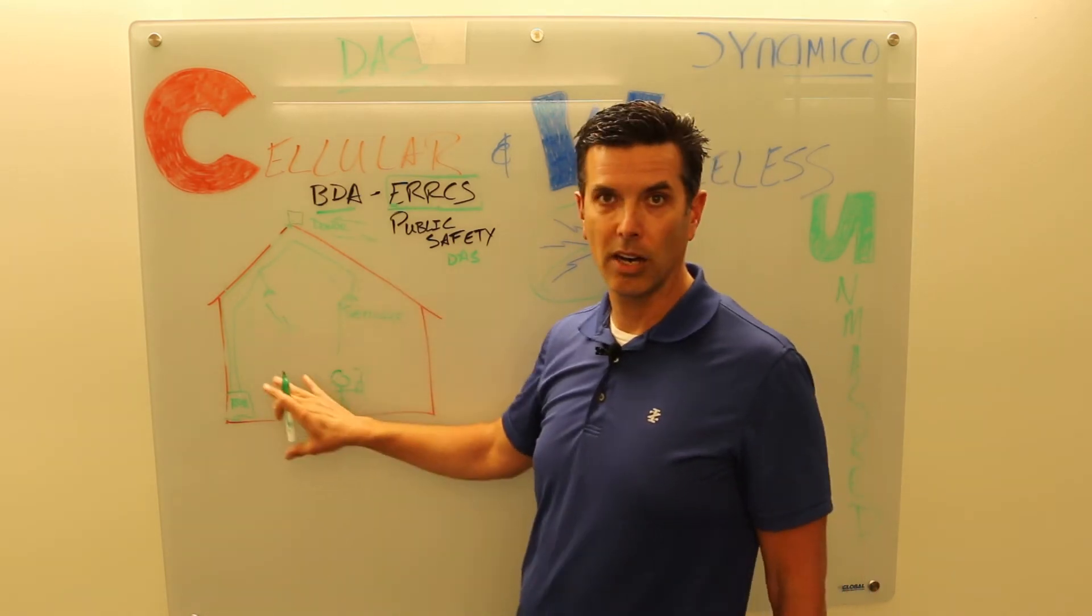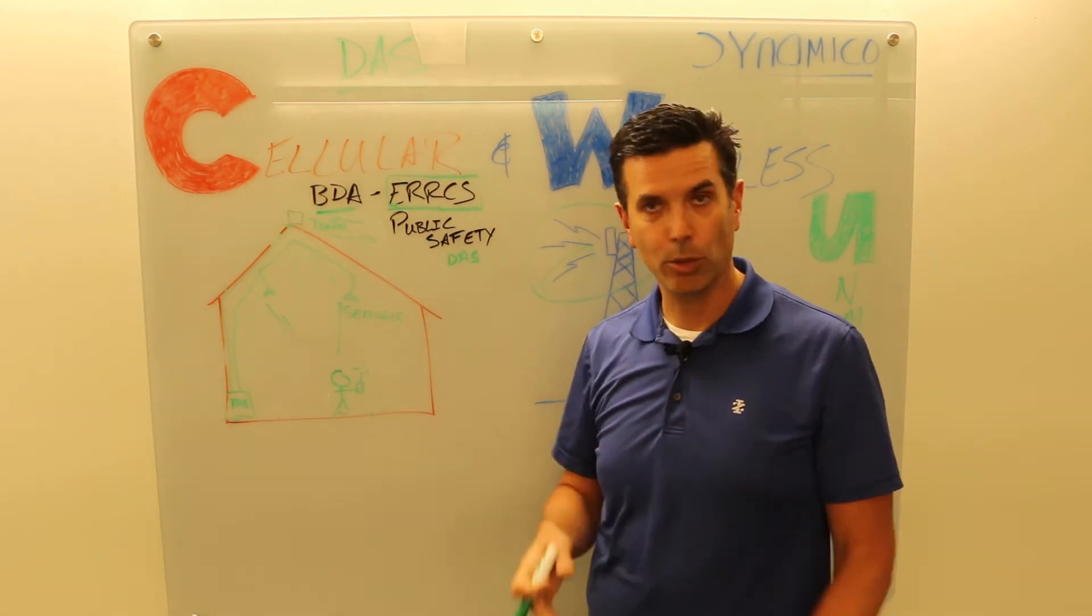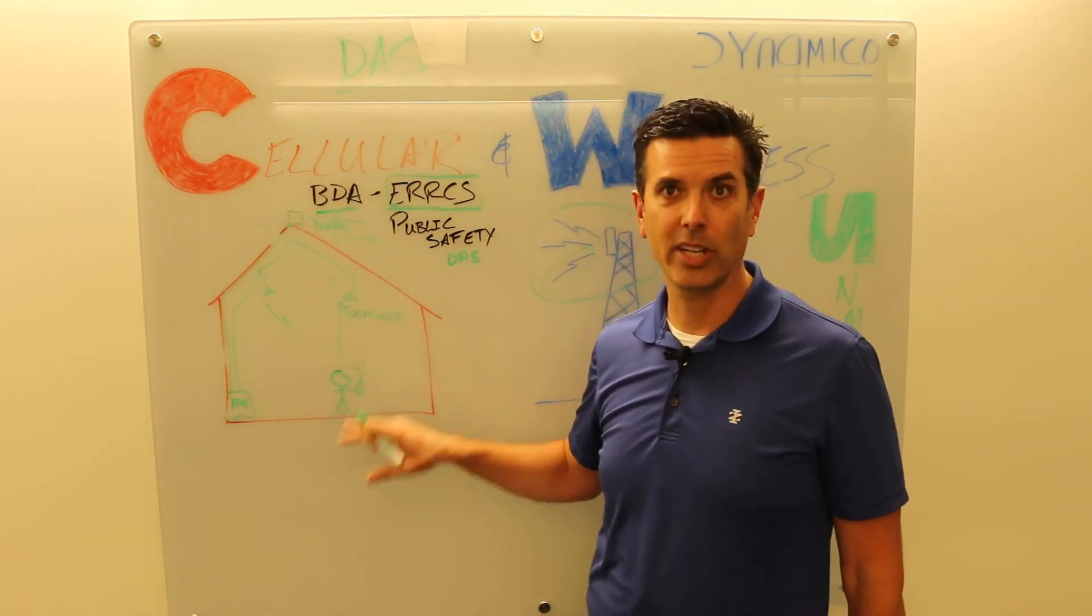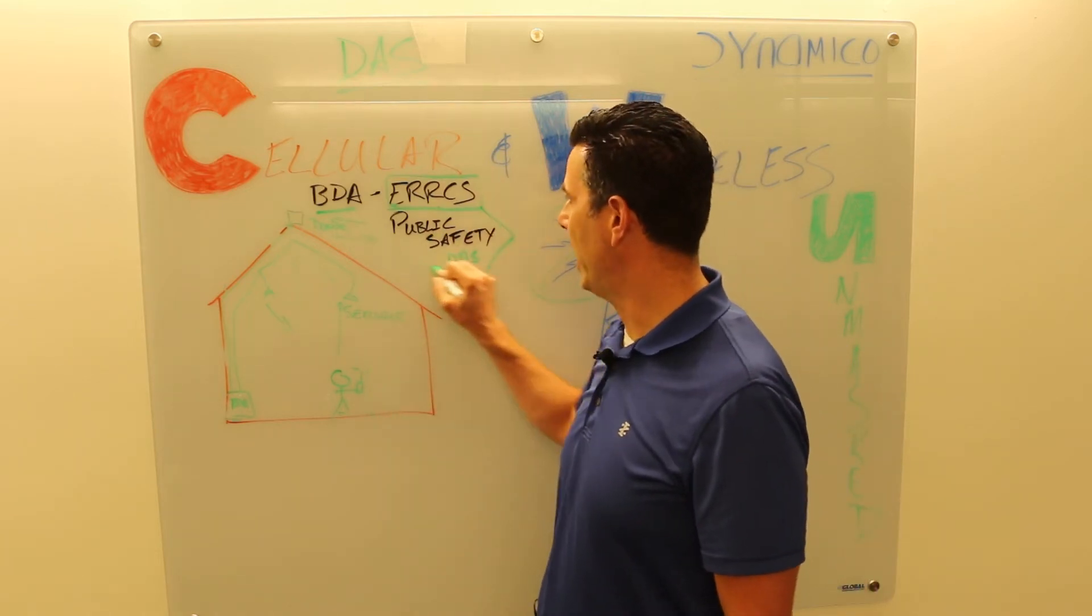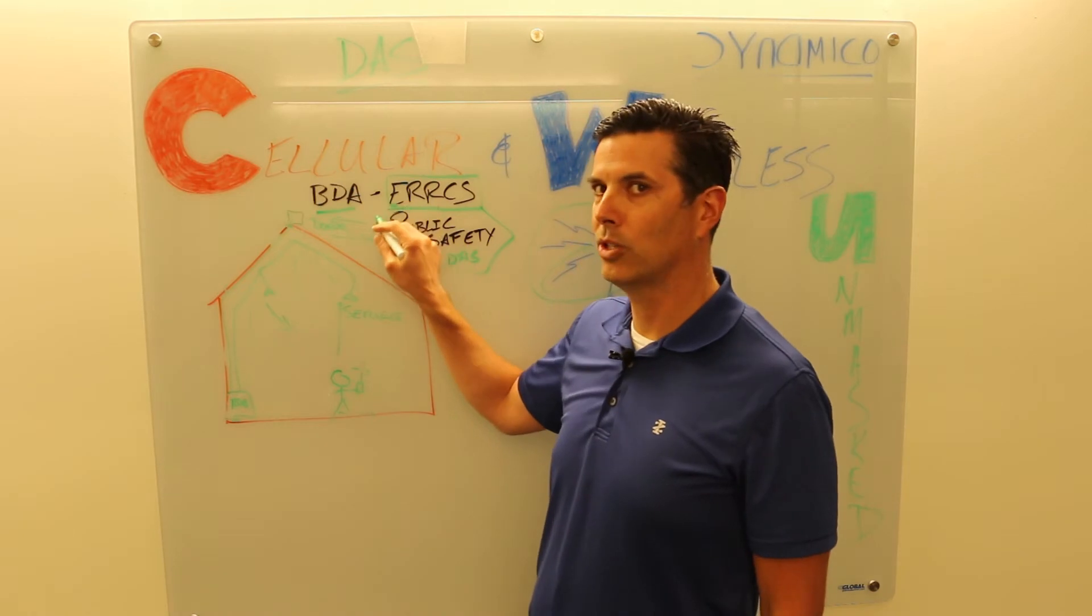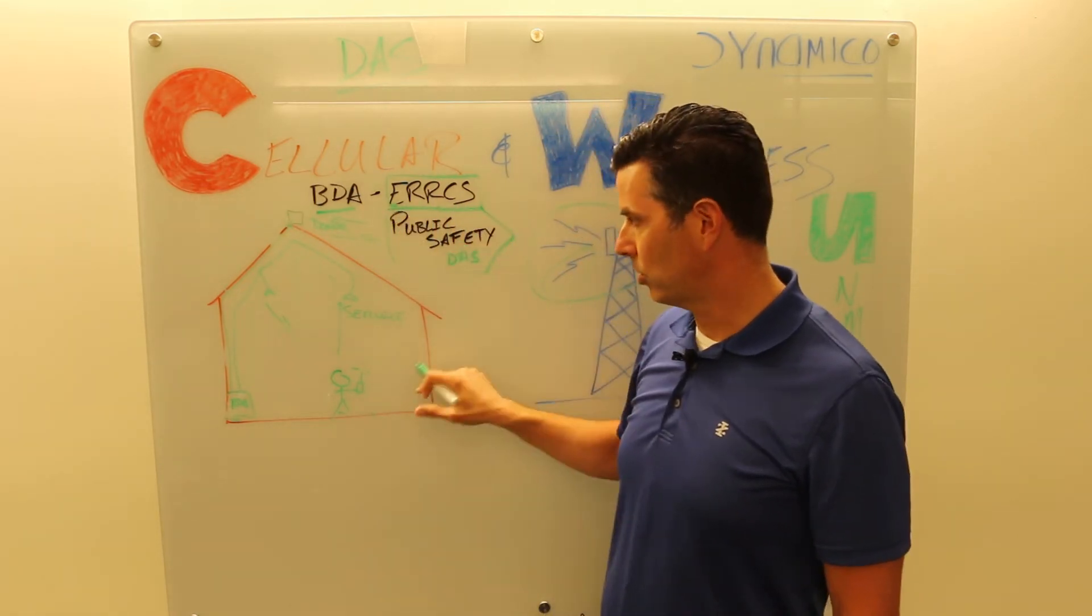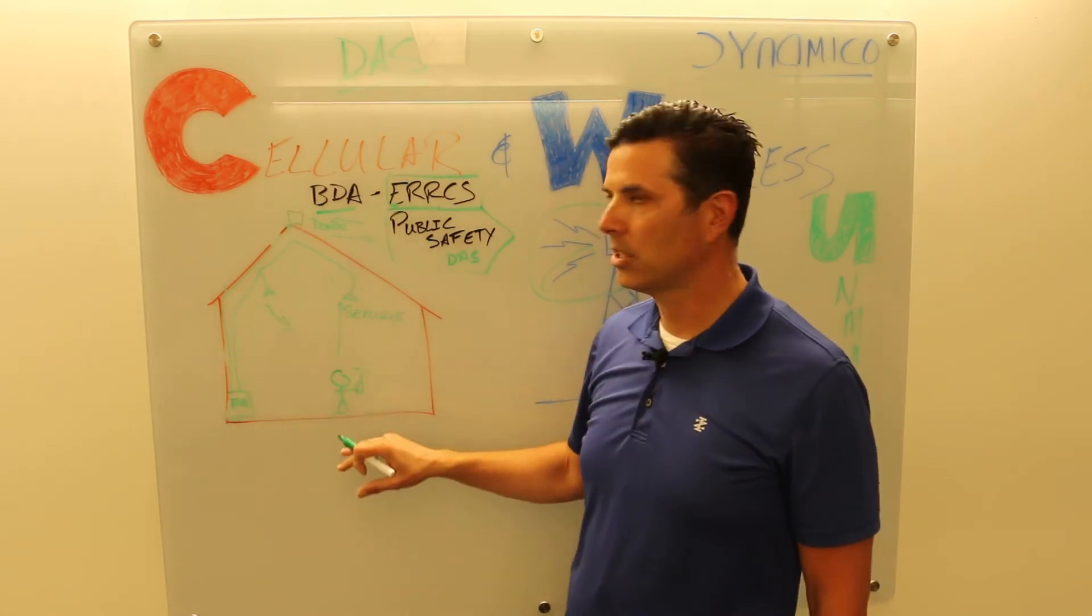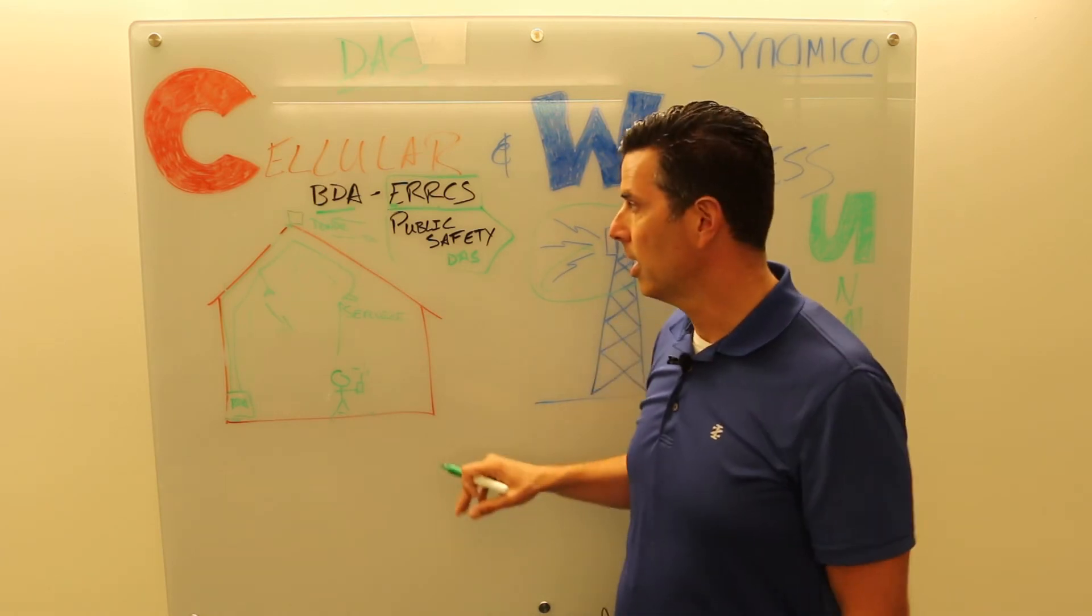Most of your building codes and local codes say that you have to have good communication ability for your first responders in any of your buildings, offices, schools, residential properties. And if you can't get acceptable levels of signal and audio quality, you have to install a public safety DAS, an ERCS, an emergency responder radio communication system.